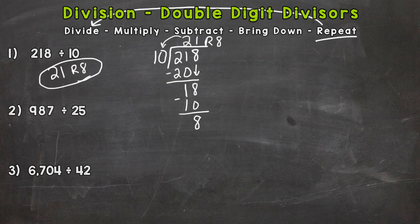So let's go on to number 2. Here we have 987 divided by 25. So let's start with our first step: divide. And we cannot do 9 divided by 25 and get a whole number, so we need to go over to the 98 and think about how many 25s can we pull out of 98, how many whole groups. So let's count up by 25s.